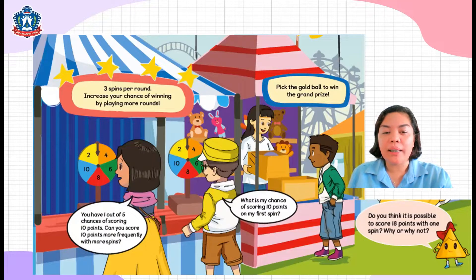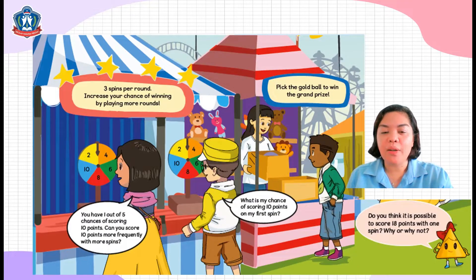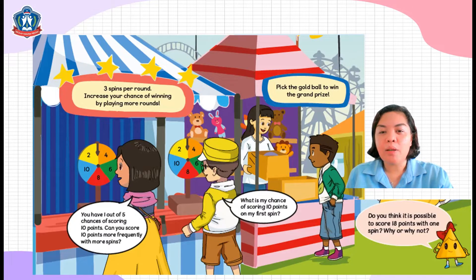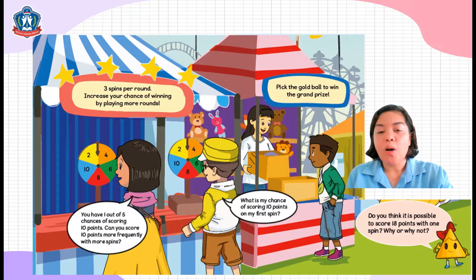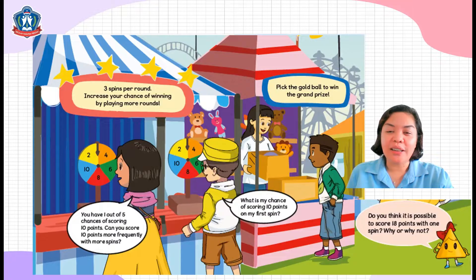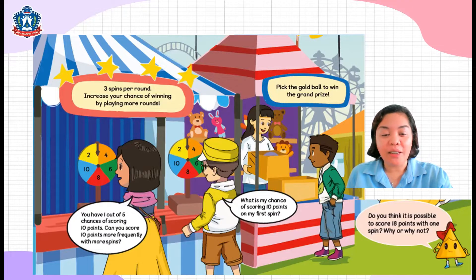The boy with the yellow jacket — what is the chance of scoring 10 points for the first spin? If you have answers for these questions, you can share them during our class. Now, the other boy will pick the gold ball to win the grand prize. With these spins here, do you think it is possible to score 18 points with one spin only? Why or why not? You can share your answers in class.